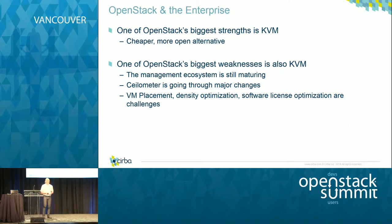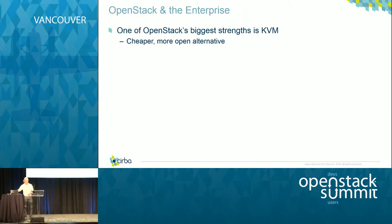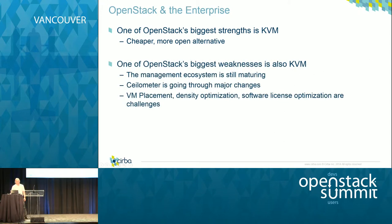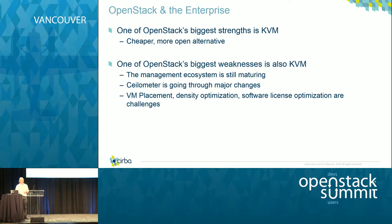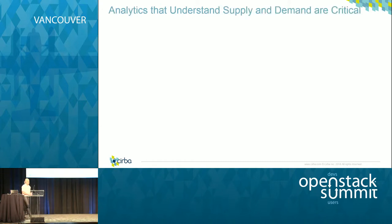Let's talk about OpenStack and the enterprise. One of OpenStack's biggest strengths is KVM — it's cheaper, a better open alternative. But working with our customers, we've found it also has some weaknesses. The management ecosystem is still maturing. Ceilometer has been going through major changes in terms of the information it delivers. Challenges we see include VM placements, density optimization, making sure environments are as densely packed as possible, and software license containment. Analytics that understand the supply and demand in these environments are critical.